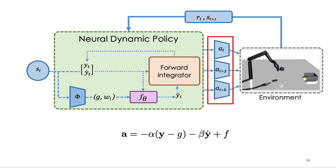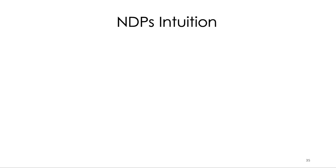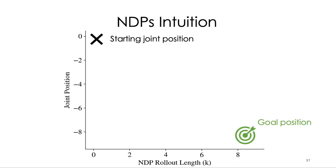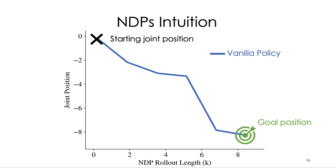Embedding such structure allows our policy to reason in the space of physically plausible trajectory distributions, while maintaining the benefits of end-to-end learning methods as well. Here's some intuition about what NDPs might be capturing. Given a starting joint position and a goal shown in green, the blue line is a trajectory taken by a vanilla RL policy. Note that this shows a noisy and jerky looking path to the goal, since the action is being decided at each time step.